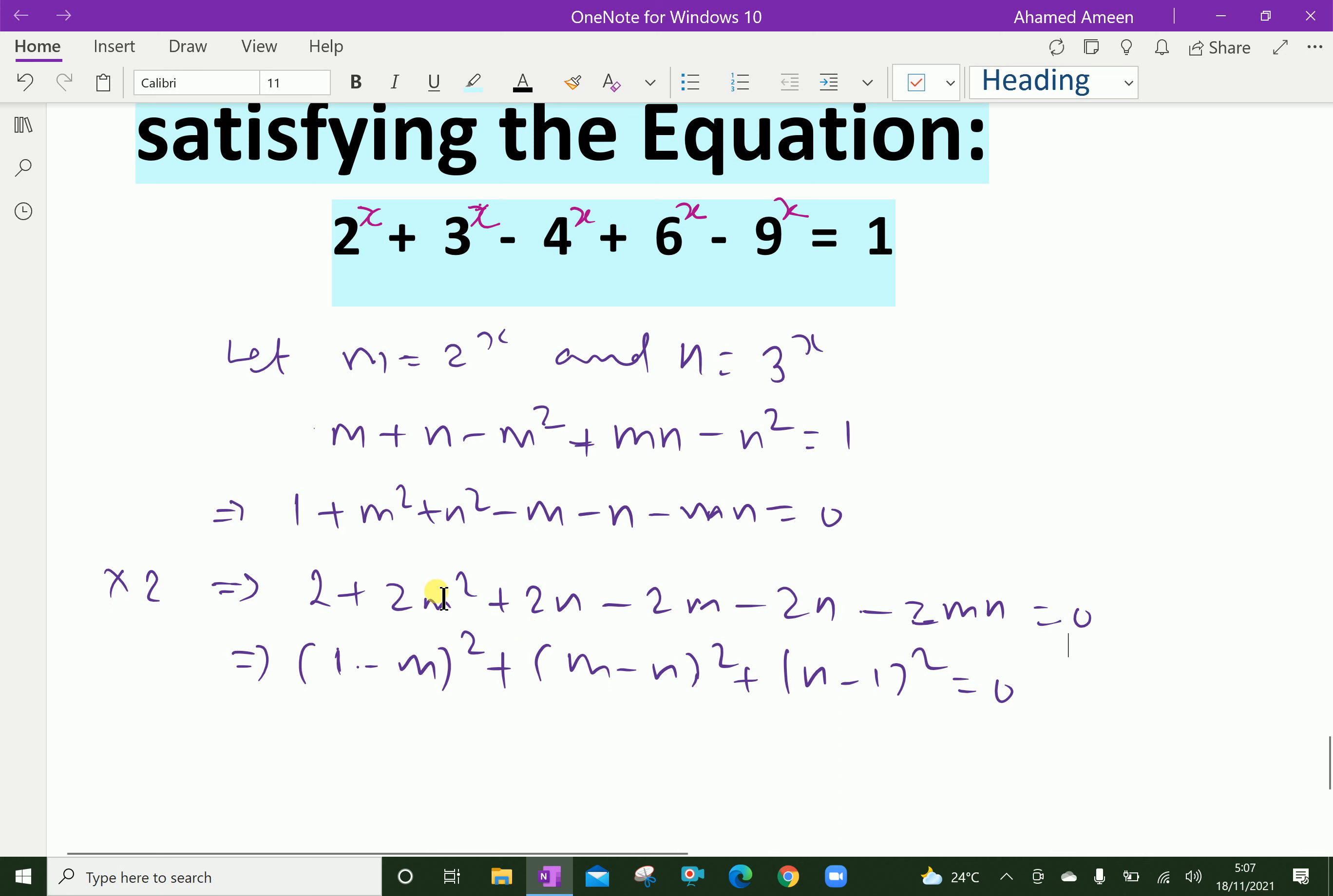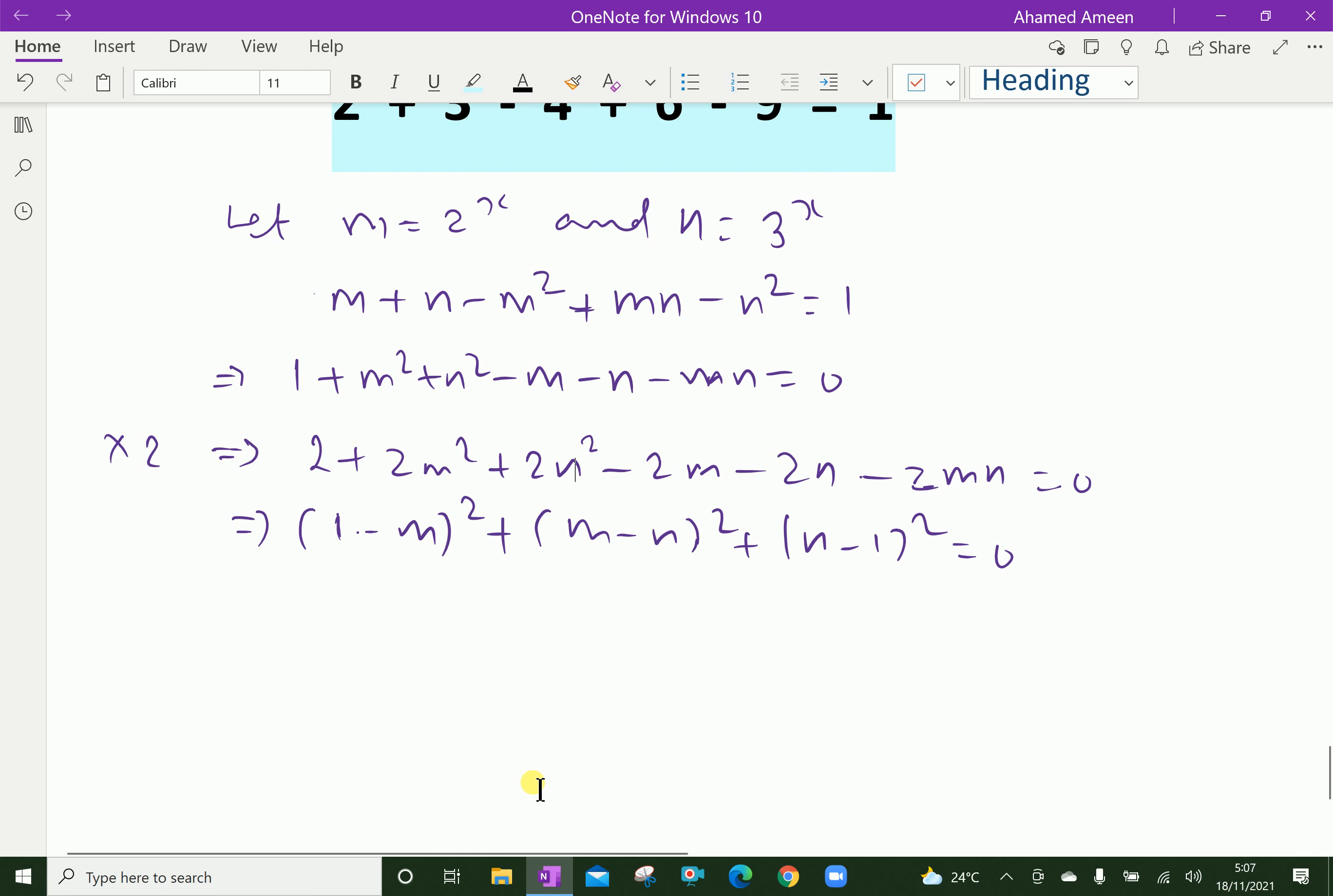We are using here (m - n) all squared, which is m squared minus 2mn plus n squared. Therefore, you can say 1 = m = n is satisfying the above equation.